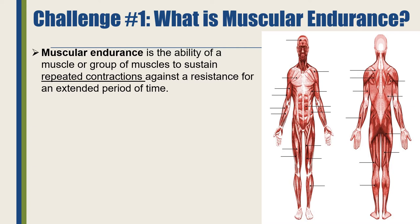So what is muscular endurance? Muscular endurance is yet another component of physical fitness. We already covered cardiovascular endurance, and now we're moving on to our second component called muscular endurance. The definition of muscular endurance is the ability of a muscle or group of muscles to sustain repeated contractions against a resistance for an extended period of time. The two key words are repeated contractions, because when you're doing muscular endurance exercises you are doing what we call repetitions or reps — for example, each shoulder press is one repetition.